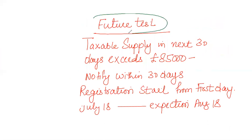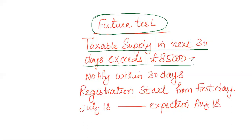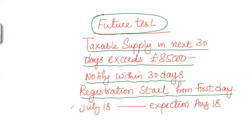As far as the future prospect test is concerned, you must determine whether the taxable supply of the next 30 days will exceed £85,000. If you foresee that the next 30 days' taxable supply will exceed £85,000, you must be compulsorily registered. You must notify HMRC within 30 days — the same 30-day criteria applies — but registration starts from the beginning of the month in which the criteria is identified. For example, if the criteria is identified in July, the 30-day notification period runs into August, but registration begins from 1st July.